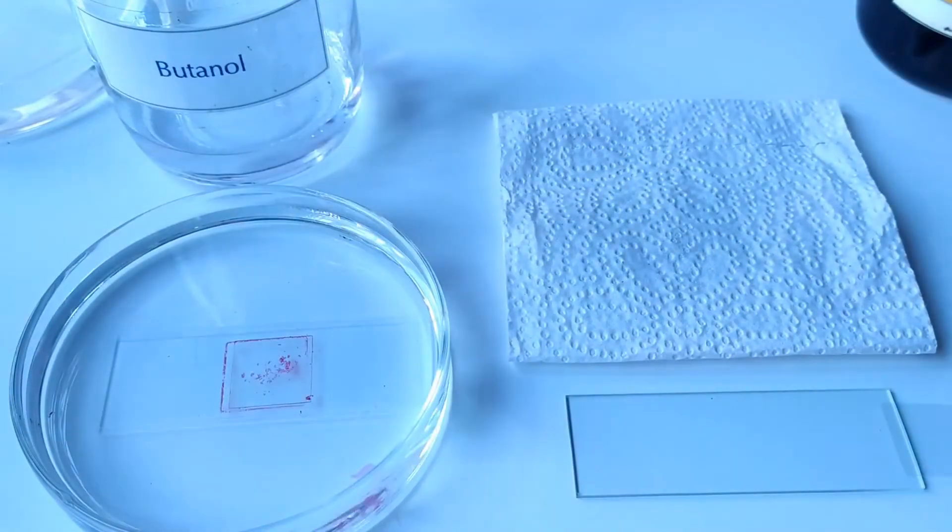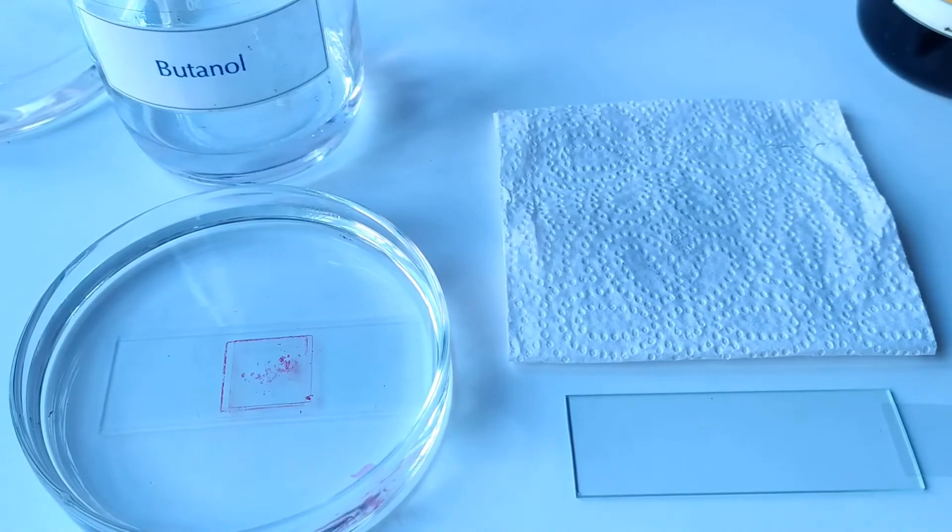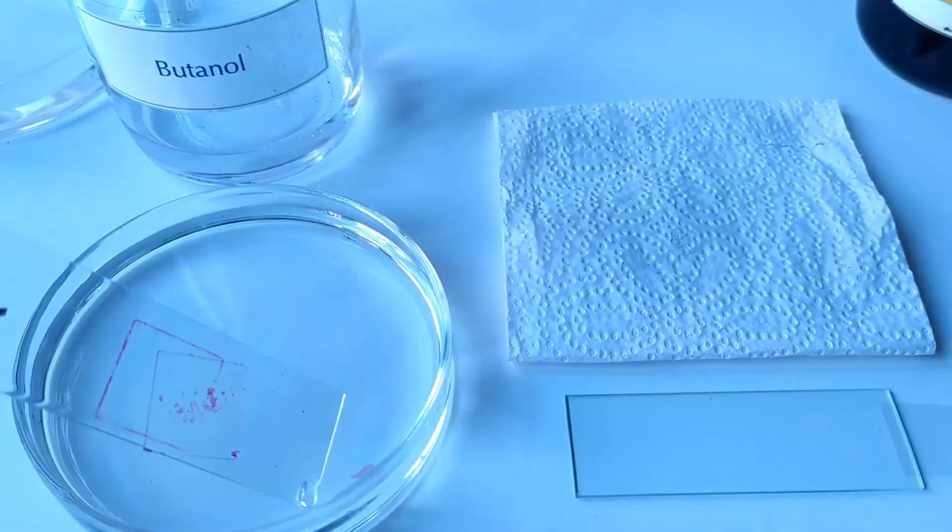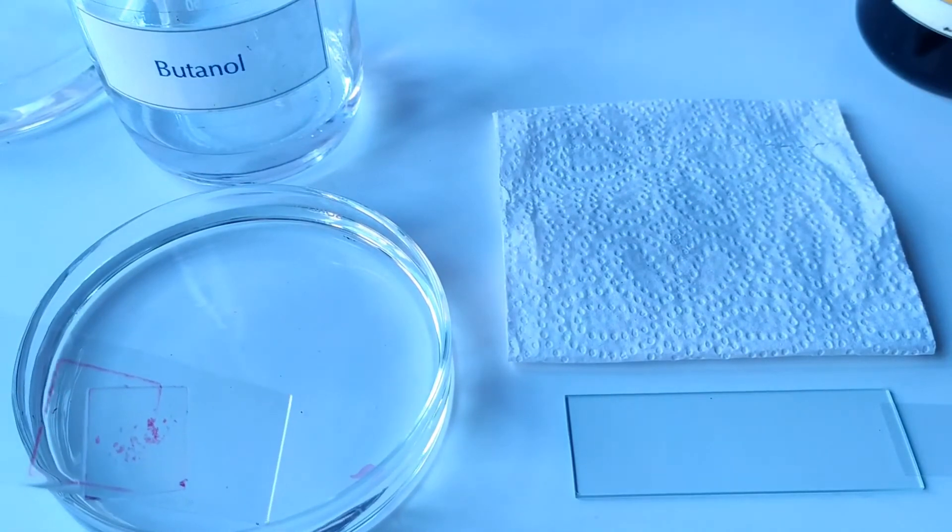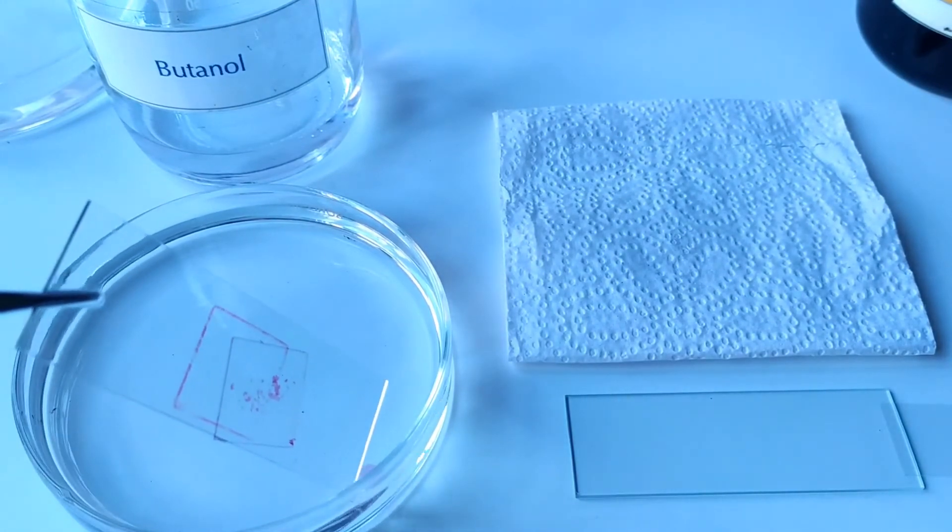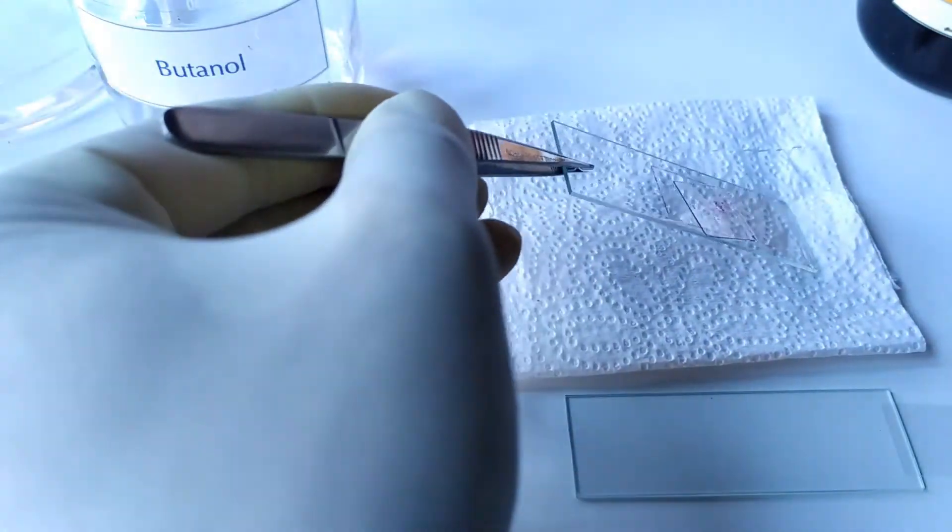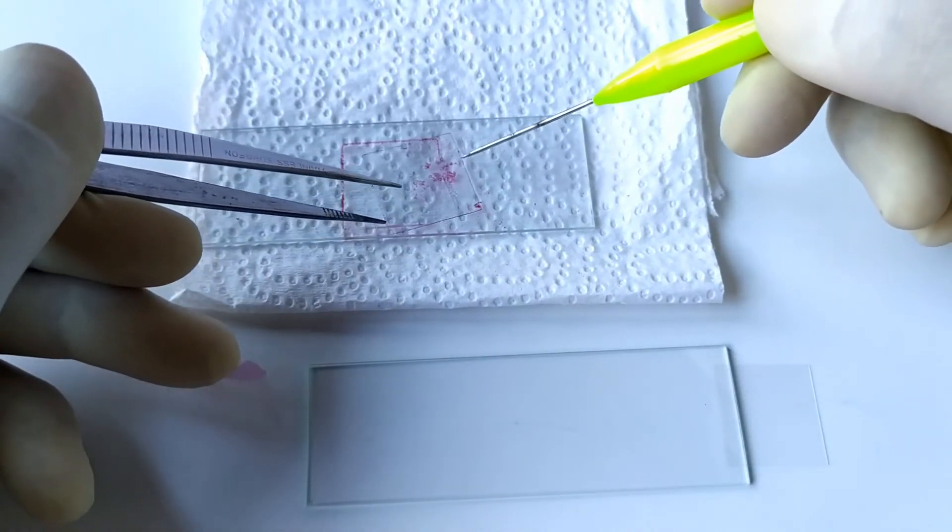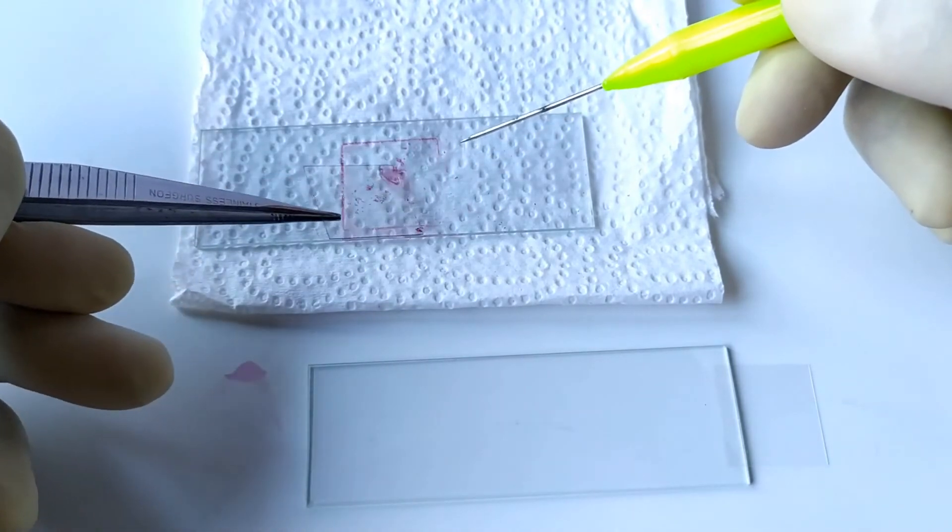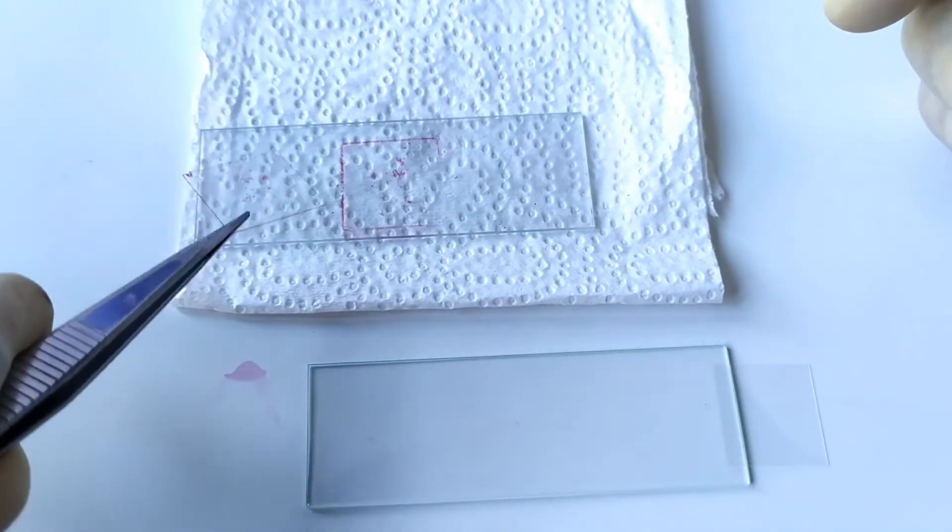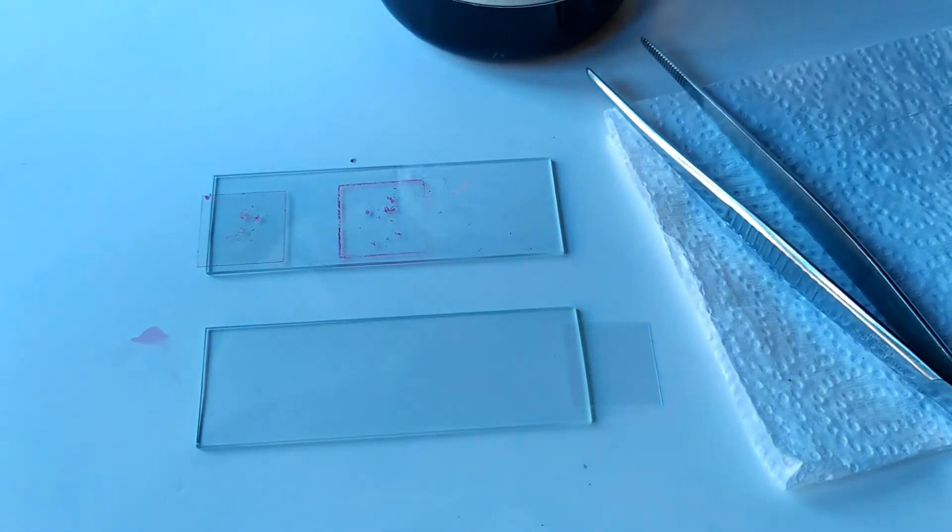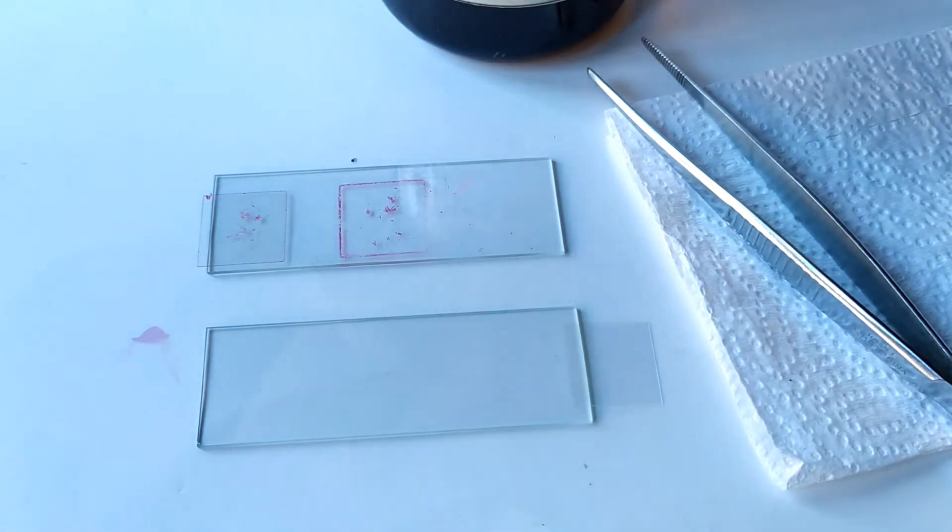Now carefully remove the slide and cover slip from the butanol solvent and rest the cover slip with the lower surface facing up. Allow the material on the slide and cover slip to partially air dry for a minute or so.